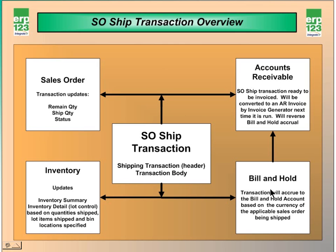The accrual is what we call bill and hold. The shipping transaction value accrues based on normally the standard cost value for the items. But in the cases of make-to-order manufacturing, it can also be a particular work order that's associated. Whatever the case, the value will be accrued at the time of shipment and reversed once the invoice is generated.